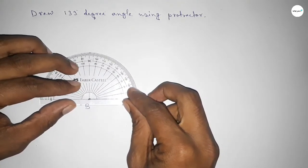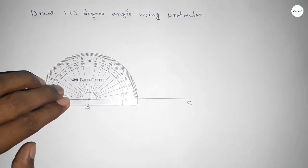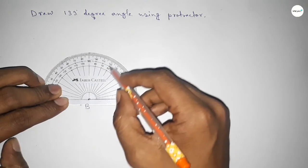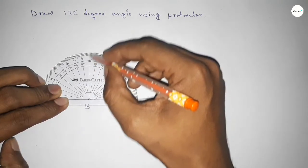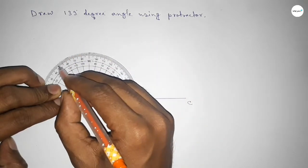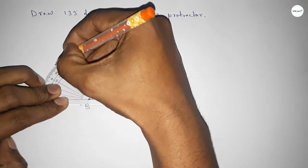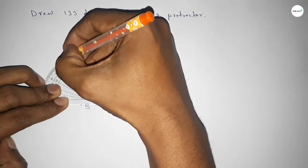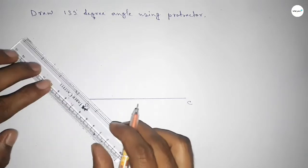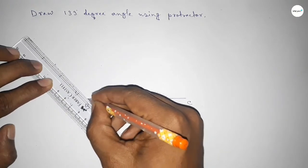So this is starting angle: 0, 10, 20, 30, 40, 50, 60, 70, 80, 90, 100, 110, 120, 130, 131, 132, 133. So this is 133 degrees. Now we have to join this to get 133 degrees. Now joining this and taking here A.